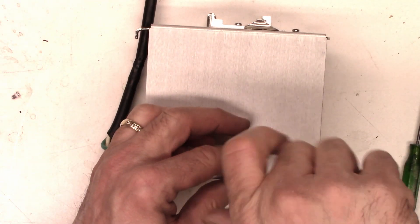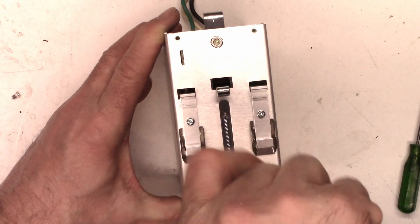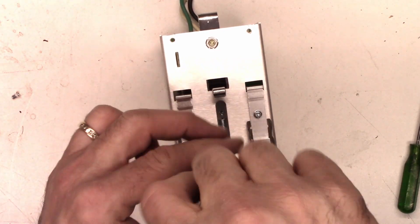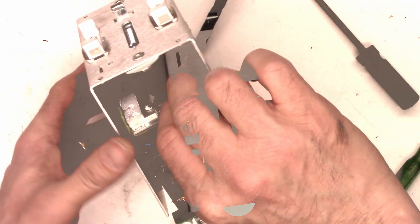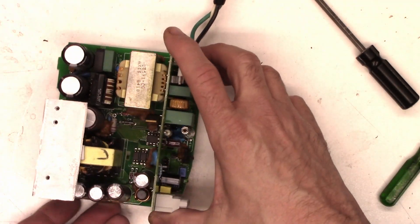We have another screw on the other side. And then back here in the back, one more screw. And then the whole unit can be taken out.